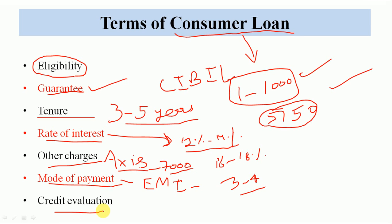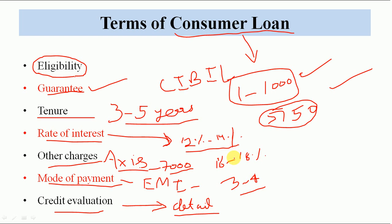Credit evaluation kaise hoti hai? Ismein aap jo bhi verification detail dete ho, aap jo bhi detail aapse maangi jati hain, uski verification hoti hai. They check your age, your income, your employment, your employer, where you are, your previous report, what assets you have, and what collateral activity you have.